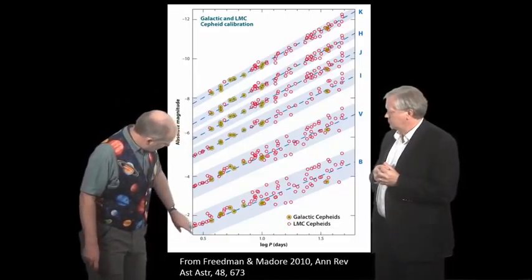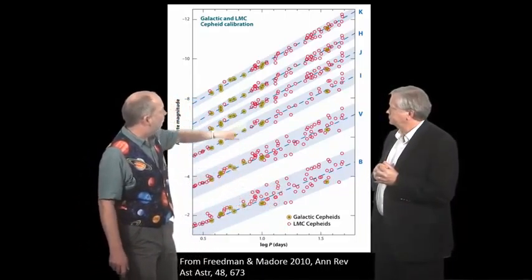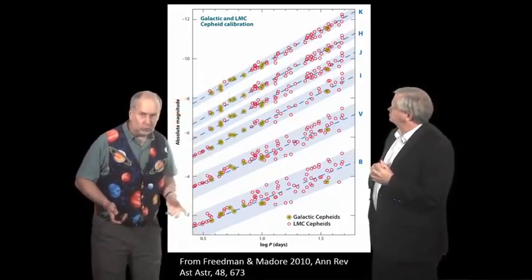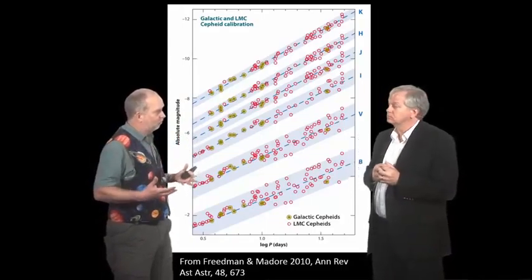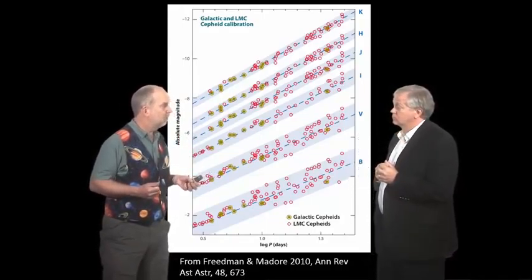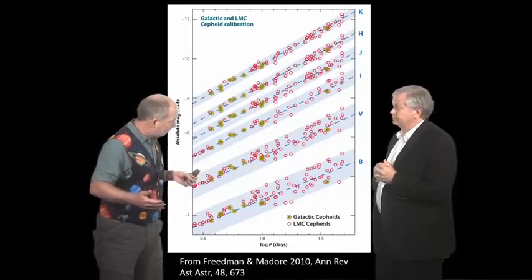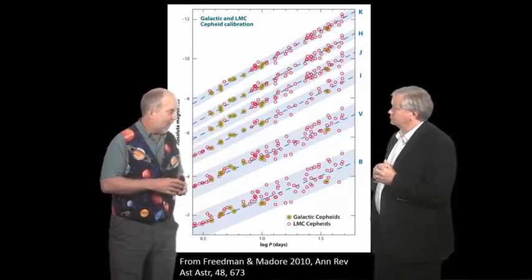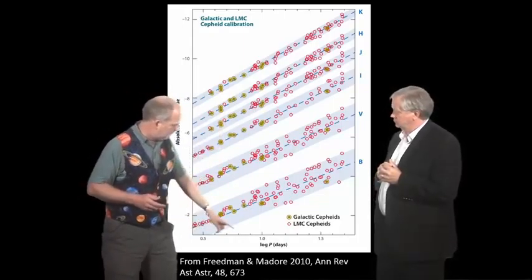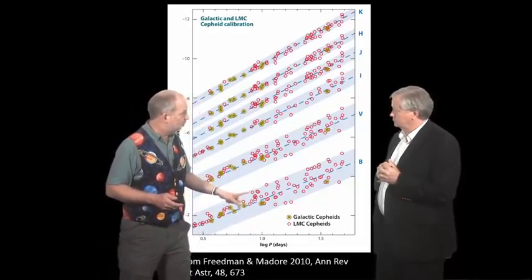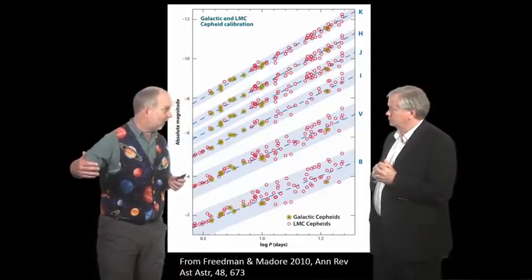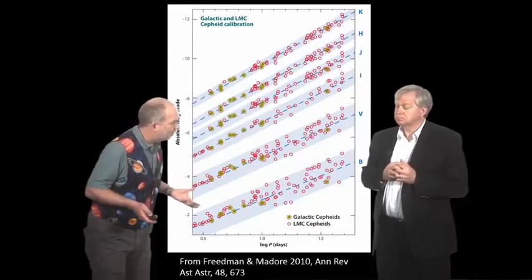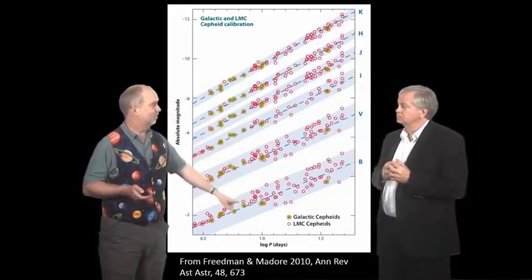At optical wavelengths the correlation isn't that great - there's a fair bit of scatter. If you go to infrared wavelengths, it gets really quite tight. So you calibrate this in the Large Magellanic Cloud, where there are lots of Cepheid variables and we know how far away it is from main sequence fitting. That gives us plots showing that if we see something with a given pulse period, we know its luminosity. Then you look at a more distant galaxy, find things with the same pulse period, use the inverse square law and the ratio of fluxes, and that gives us the distance.